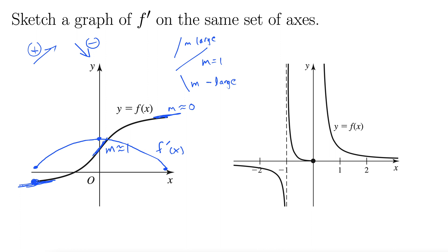Let's look at the second example. There's a lot going on here — we have asymptotes galore and we have a discontinuity. So let's just use the same method. We start by looking at places where the slope of the line might be about zero. Those are the anchor points, just to get us started.